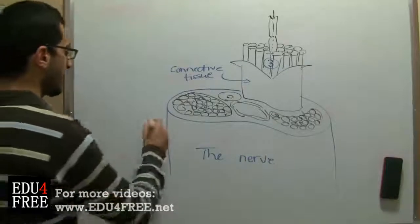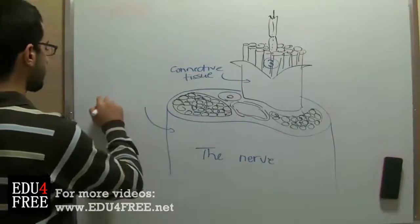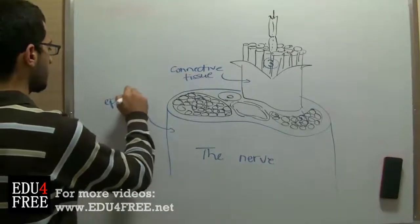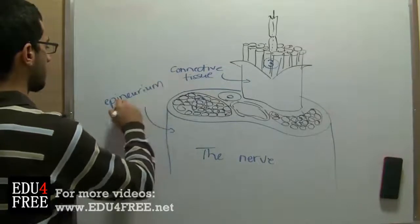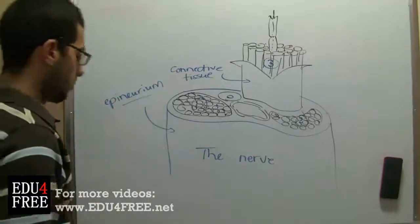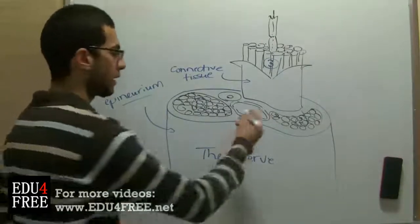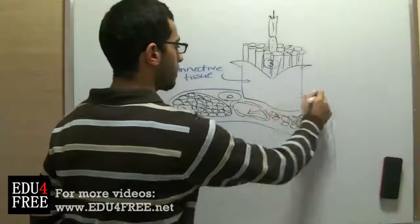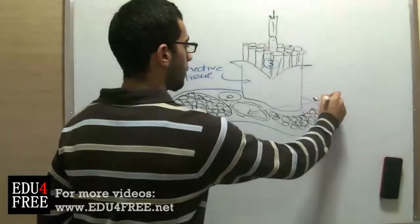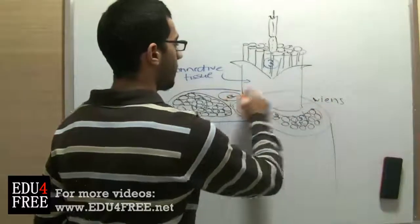This tissue is called the epineurium. Now, the nerve also can contain blood vessels like veins and arteries.